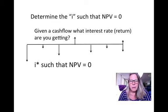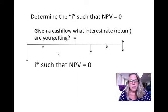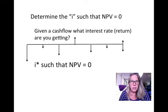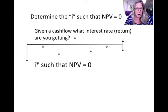Internal rate of return is where you actually calculate an interest rate such that the net present value is zero. So you're given a cash flow, and the question is what interest rate or return are you getting? You set up the net present value equation, set it equal to zero, and solve for i. That's called internal rate of return, or i-star.